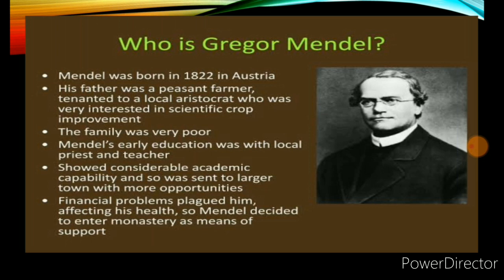He was donated to a local aristocrat who was very interested in scientific crop improvement. His farmer family would cultivate crops very nicely and take the best yield. His family was very poor. Mendel's early education was with the local priest and teacher. Later he became a teacher himself. He studied mathematics, physics, and natural science, and had great interest in biology.